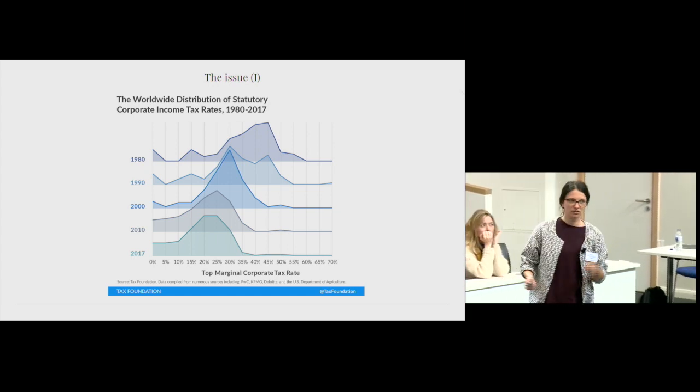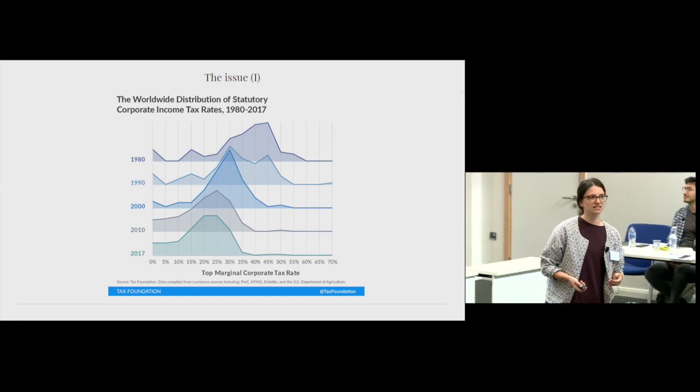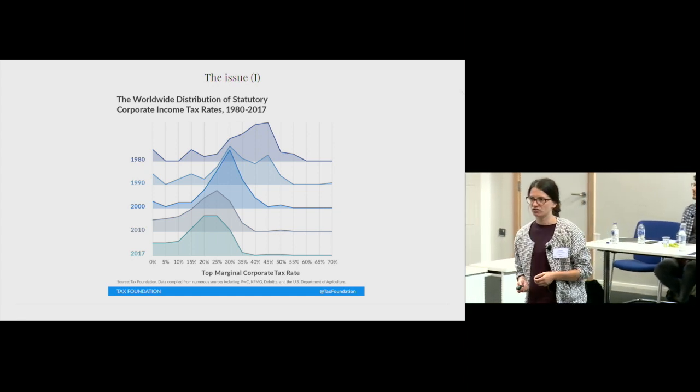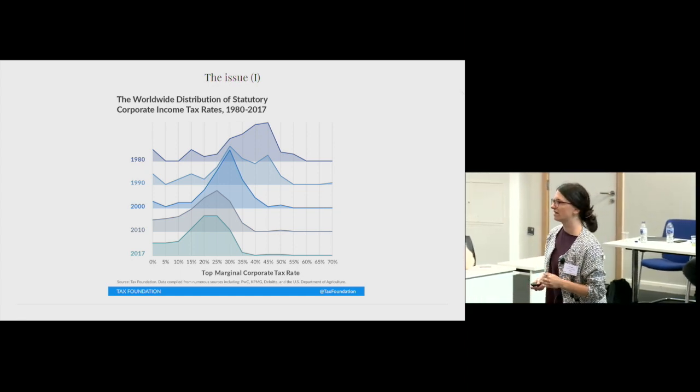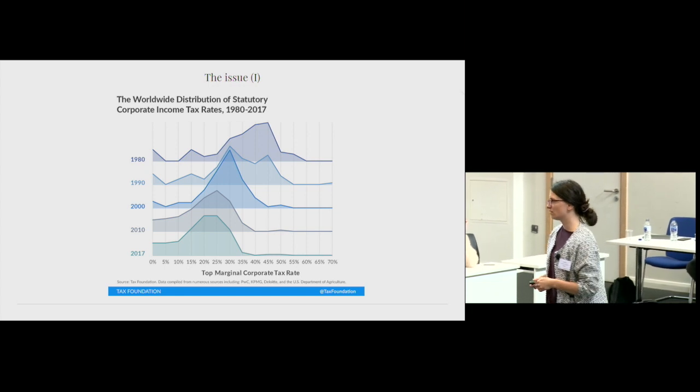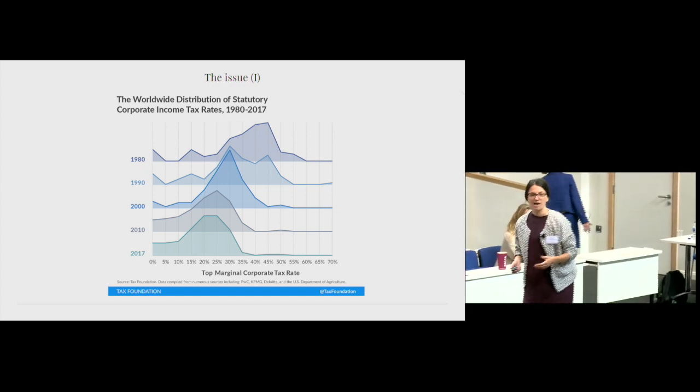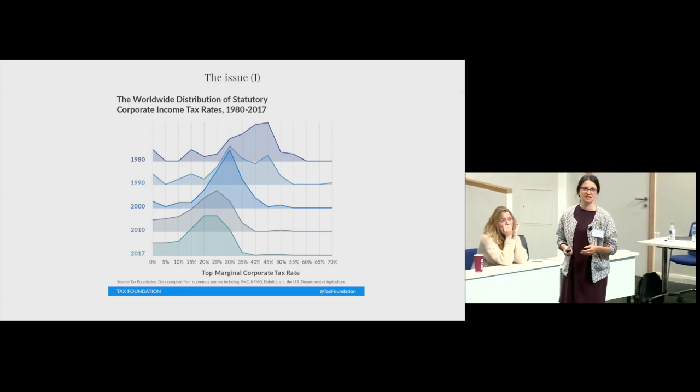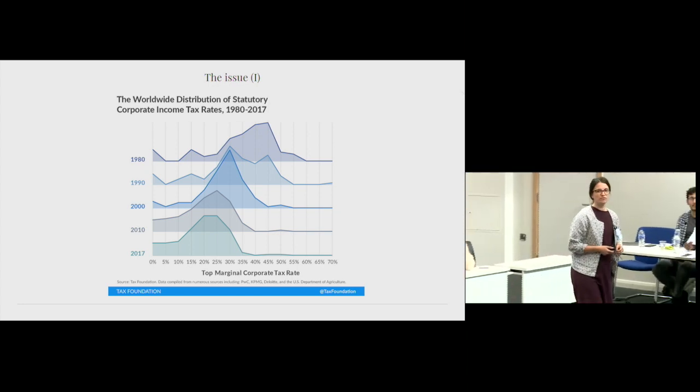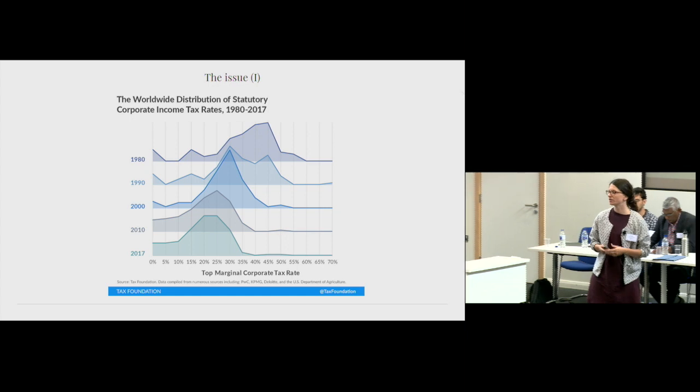On top of that, we see that companies develop quite sophisticated strategies in lowering their tax rates even further. For example, you probably all know Apple was accused of paying less than 0.005% on their global profits.